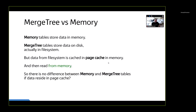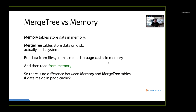But actually it is more complicated. MergeTree tables store data on disk - but not quite on disk, it is actually in the file system. The file system has a page cache, and page cache is in memory. So when we read data from the file system, it can actually be read from memory, exactly the same as for memory tables. So we can make another conclusion: there should be no difference between memory and MergeTree tables if data is in the page cache. But in our previous experiment, we see that MergeTree was slower than memory. So why is it slower?